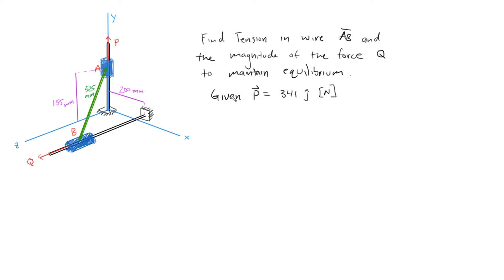In this problem we're told to find the tension in wire AB and the magnitude of force Q while keeping the system at equilibrium. There are sliders A and B restrained to move along their respective poles. For B, there are reaction forces restraining it in the Y and X directions, and for A, the body cannot move in the X or Z direction — it can only move in the Y direction. We need to keep those in mind when doing the free body diagram.